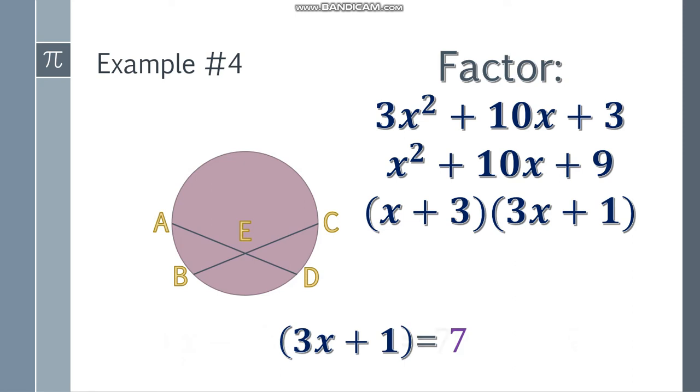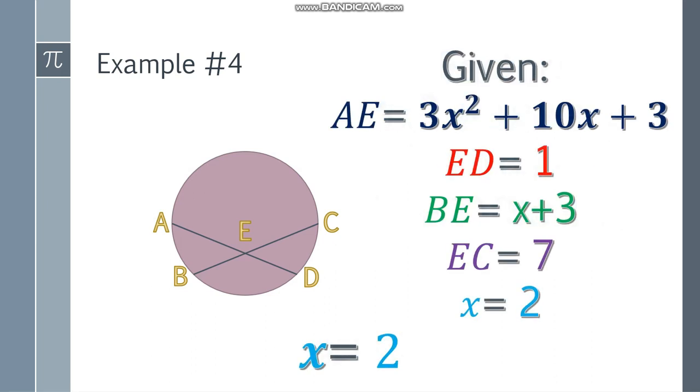Now, we just remove the parentheses and simplify it by subtracting 1 to both sides. We have 3X equal to 6. Divide both sides by 3 and the final answer is X is equal to 2. So we now know the value of X is equal to 2.